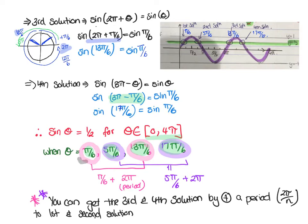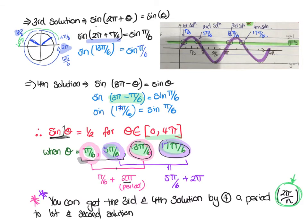Once you've got the first two solutions from unit circle knowledge and exact values, you can always get the next ones by adding a period. Because this is a basic sine graph, the period is two pi. Add two pi to π/6 and you get 13π/6 — the third answer. Add two pi to 5π/6 and you get the fourth answer. Be careful though — the period might not always be two pi, it depends what the period is. The period is 2π divided by n, where n is the number in front of the angle.